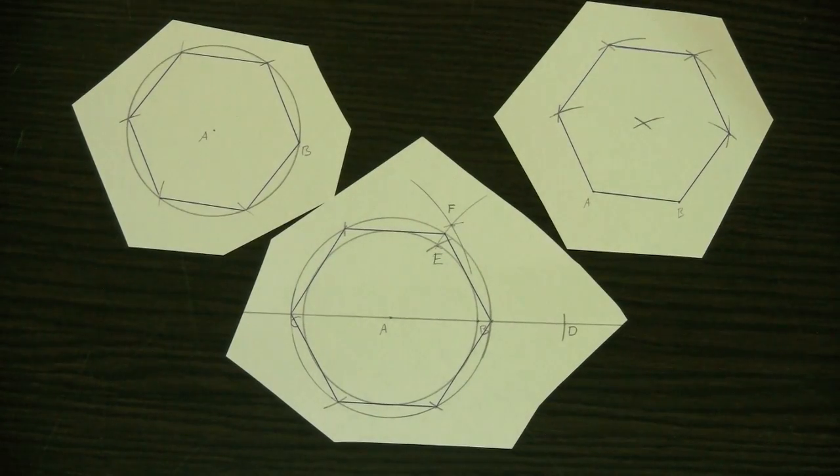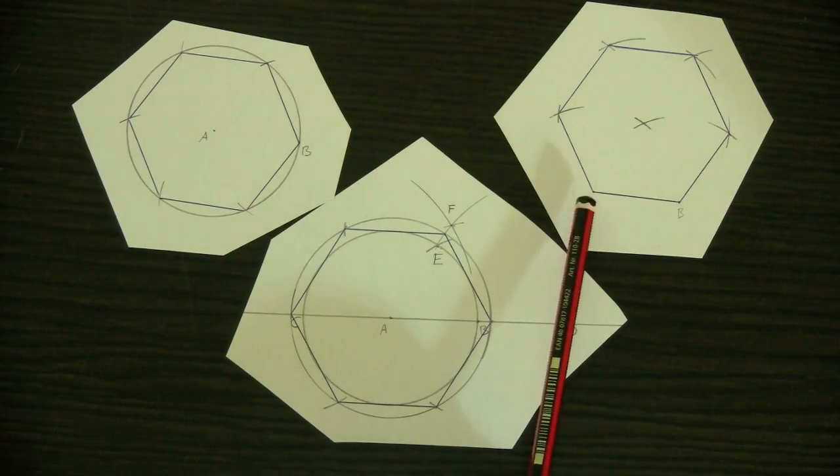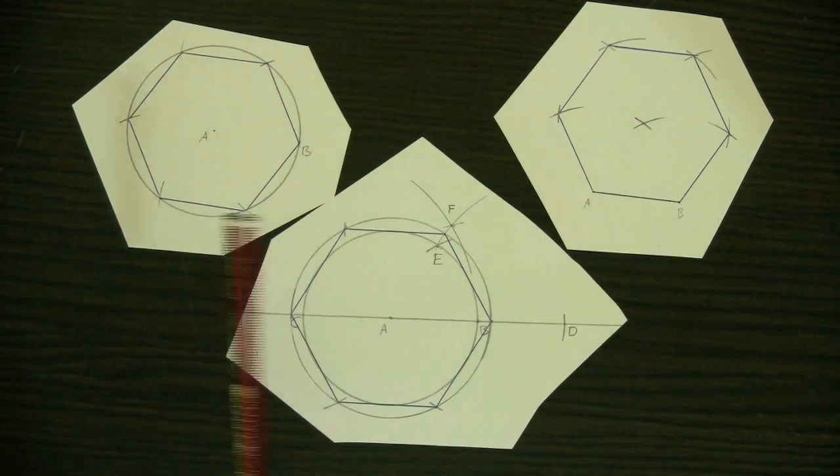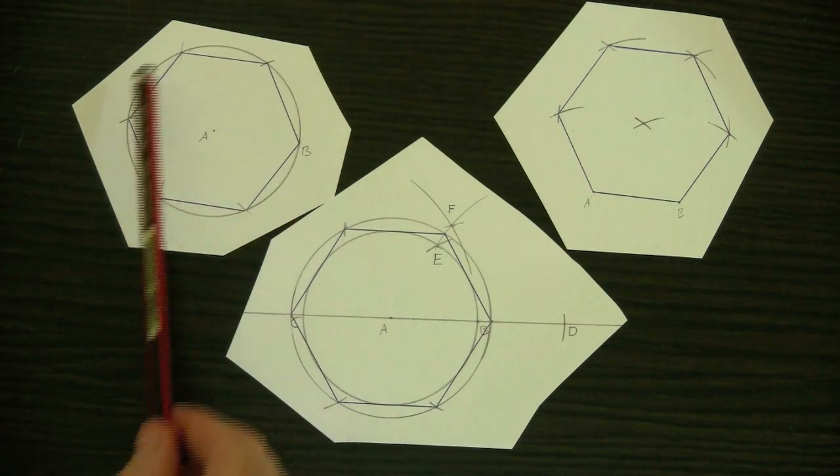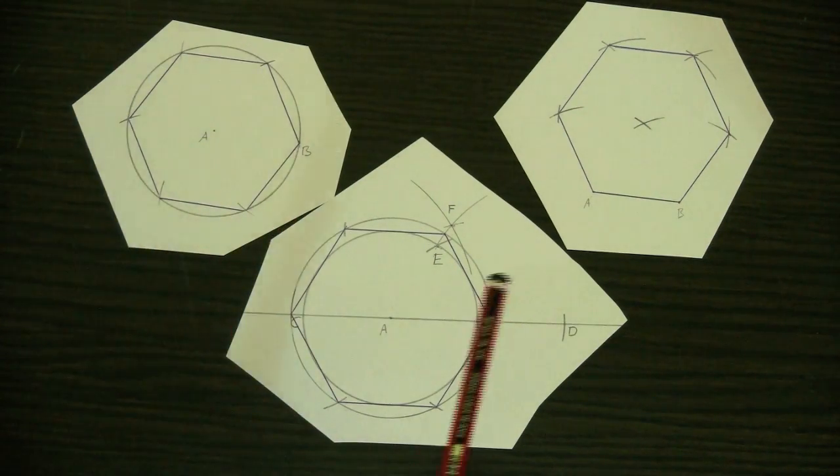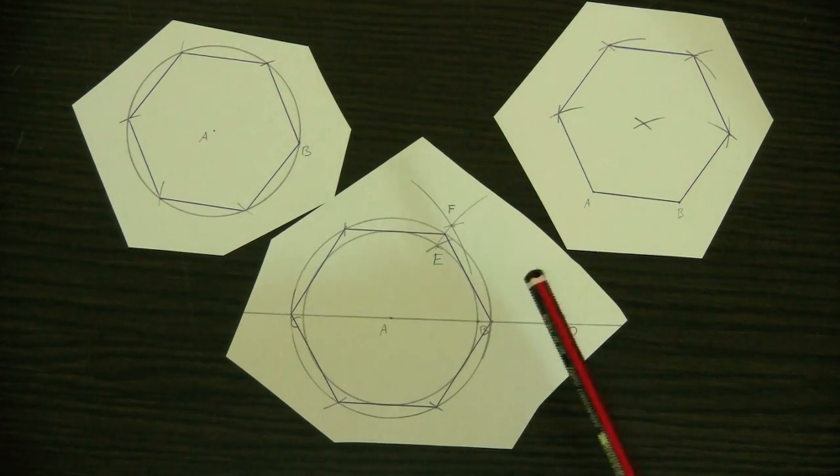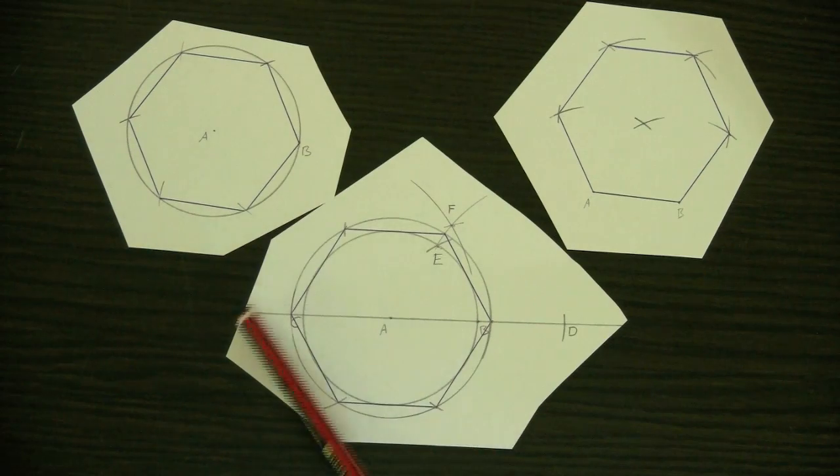And so there you have it, three different ways to construct a regular hexagon, which is one of the easiest regular shapes to make if you want to make it with a given edge length, or if you want to draw it inside a given circle. And slightly more challenging, you can also draw it just outside a given circle.